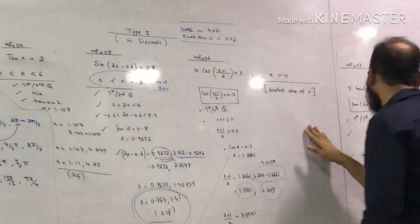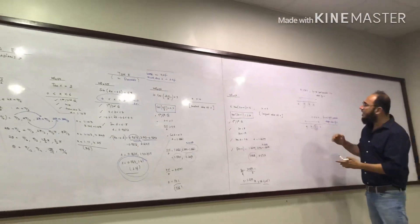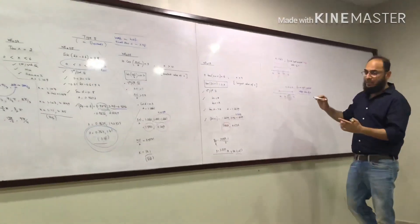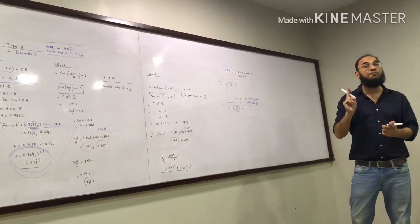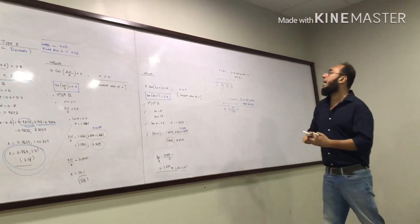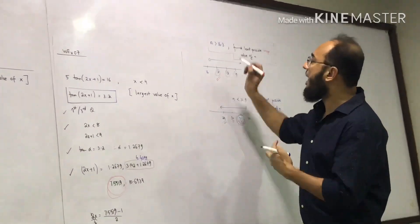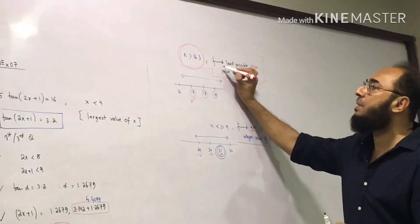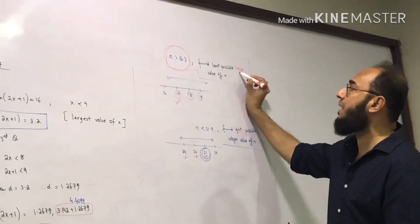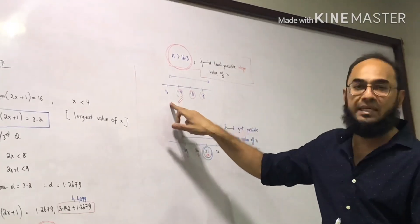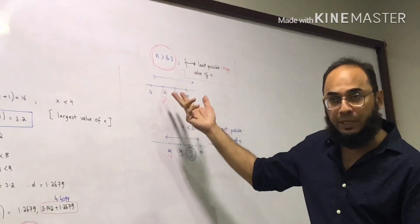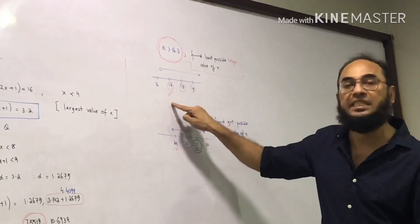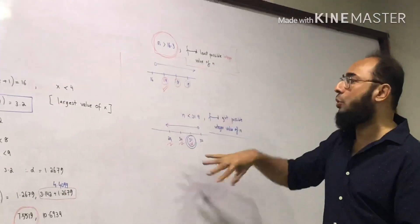Before Examples 6 and 7, consider the number line concept. If a calculation gives n greater than 16.3 and the examiner asks for the least possible integer value of n, the eligible integers are 17, 18, 19... and the smallest is 17. Conversely, if n is less than 31.9 and the examiner asks for the greatest possible integer value, eligible candidates are 31, 30, 29... and the greatest is 31.